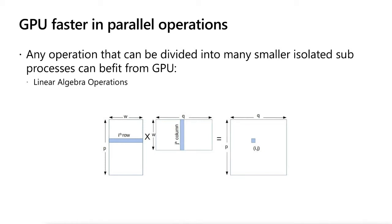After doing this, you can have higher throughput for your application. This is most prevalent in operations that relate to linear algebra. A lot of modern applications being developed for many different use cases take advantage of linear algebra. One of the benefits is that operations, for example multiplication of two matrices, can be performed independent of other rows and columns — the operation of row multiplied by column to produce IJ in the final matrix can be done independently.